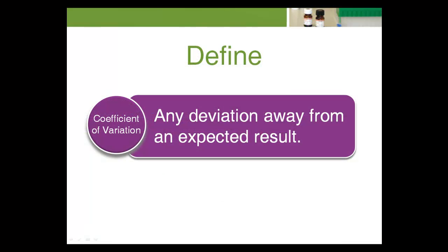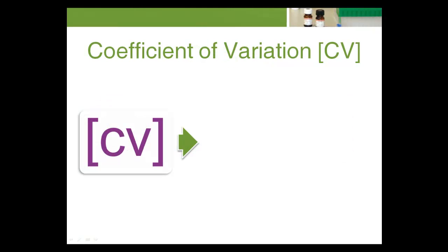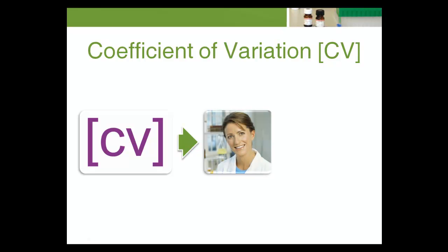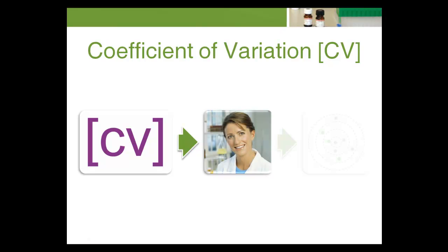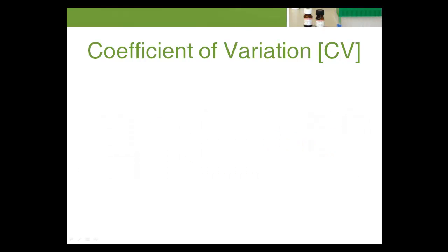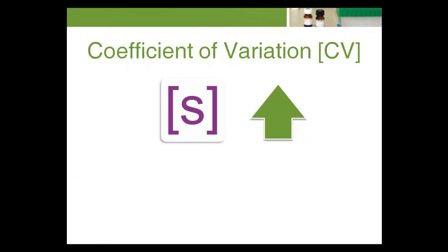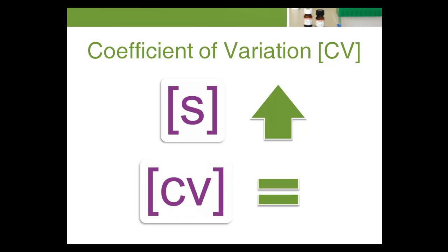Let's begin with Coefficient of Variation. CV is the ratio of the standard deviation to the mean and is expressed as a percentage. The CV allows the technologist to make easier comparisons of overall precision. Since standard deviation typically increases as the concentration of the analyte increases, the CV can be regarded as a statistical equalizer.